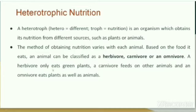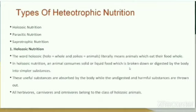A herbivore only eats green plants, a carnivore feeds on other animals, and an omnivore eats plants as well as animals. Now, the types of heterotrophic nutrition are: holozoic nutrition, parasitic nutrition, and saprophytic nutrition. We will discuss them one by one.